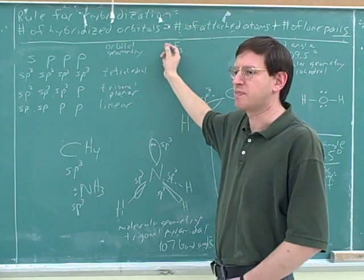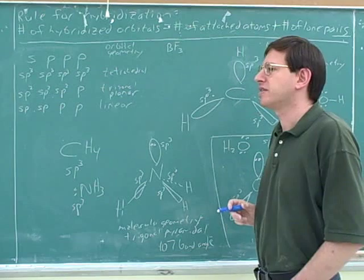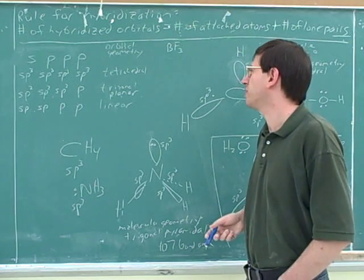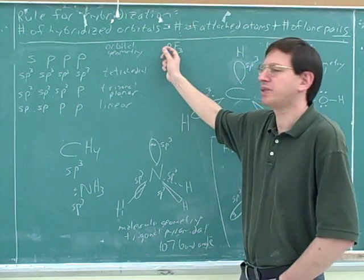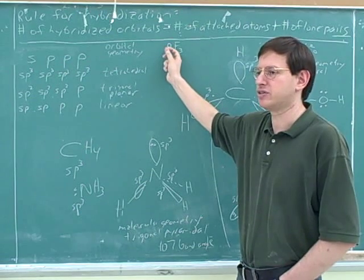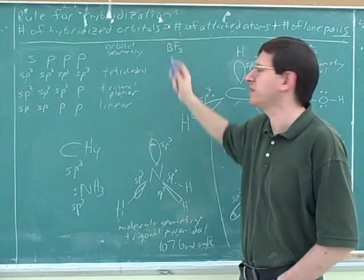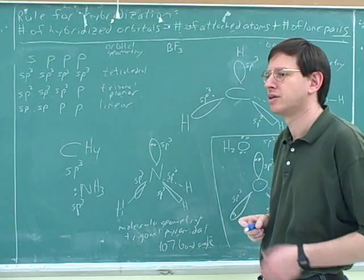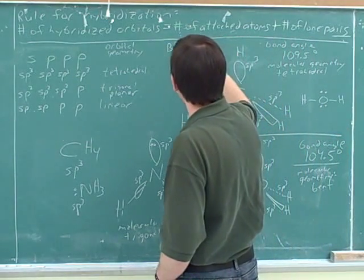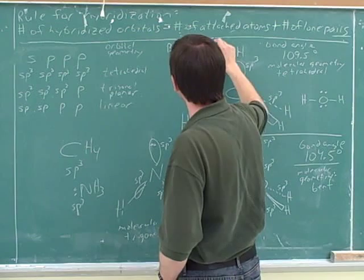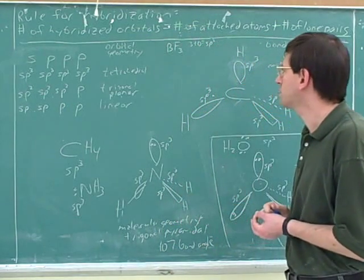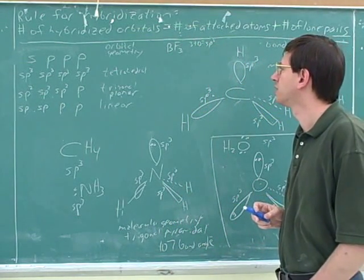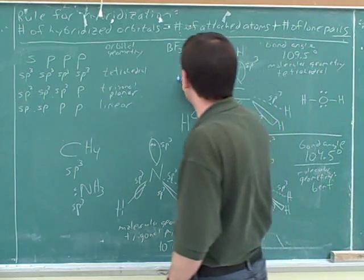Boron is pretty far to the left in the periodic table. In fact, it's so far to the left that when it's uncharged, it actually has an incomplete octet and no lone pairs. So boron, this does not have any lone pairs. So what would be its hybridization? Sp2. Sp2. There's three attached atoms and no lone pairs. This would be sp2. That's right. So what's the orbital geometry? Trigonal planar.